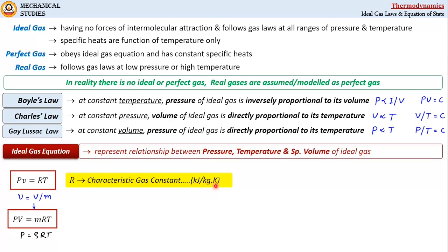Here, capital R is called the characteristic gas constant, which has units of kilojoule per kg·kelvin. Its value is different for different gases. For example, for air its value is 0.287 kJ/(kg·K).